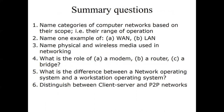Now let's talk about summary questions. First, name categories of computer networks based on their scope. Second, name one example of a wide-area network and a local area network. Third, name physical and wireless media used in networking. Fourth, what is the role of a modern router and bridge? Fifth, what is the difference between a network operating system and a workstation operating system? Sixth, distinguish between client-server and peer networks.